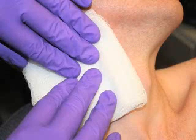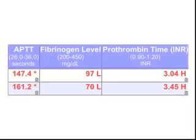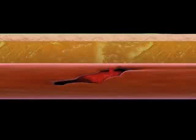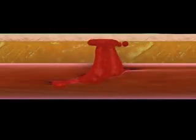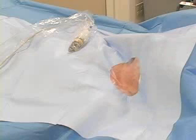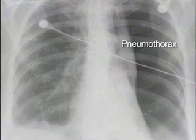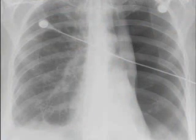For persistent bleeding at the catheterization site, apply direct pressure and check the results of coagulation studies. Replace blood products as necessary. If bleeding continues, there may be an arterial or venous tear that requires surgical exploration. In any of these circumstances, do not attempt to place the line at the opposite site, since you risk contralateral pneumothorax and further respiratory compromise.